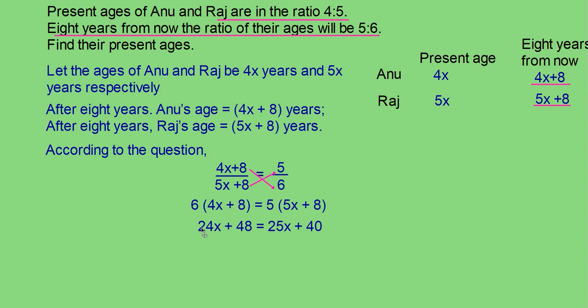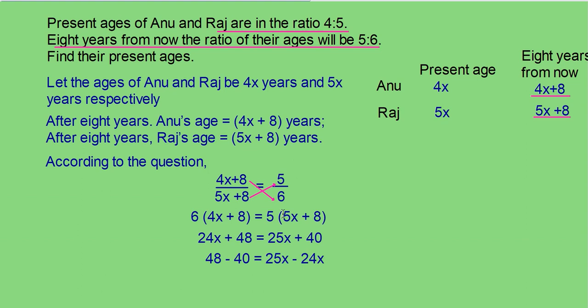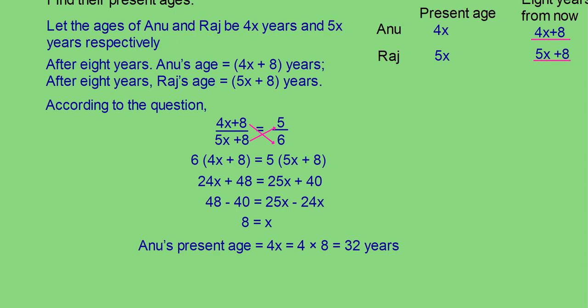Transpose 24x to the other side — it becomes 25x − 24x. Transpose 40 to the LHS — so we get 48 − 40 = 25x − 24x, which gives 8 = x, or x = 8. So you can conclude: Anu's present age = 4x = 4 × 8 = 32 years, and Raj's present age = 5x = 5 × 8 = 40 years.